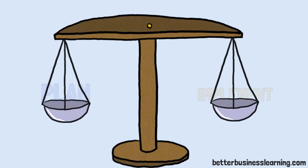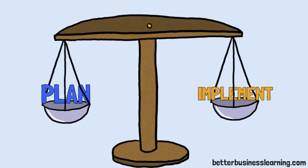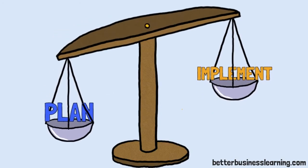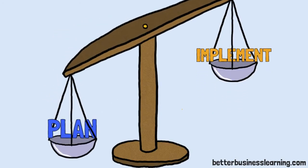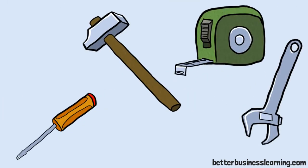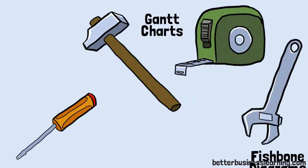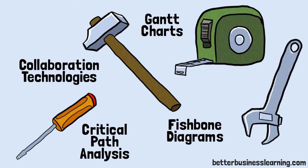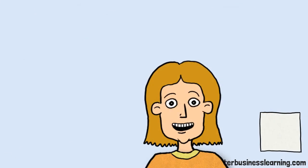Planning is 80% of project management. Remember the six Ps: proper planning prevents poor project performance. There are a lot of great tools that can help you keep track of your project — use these during your planning.